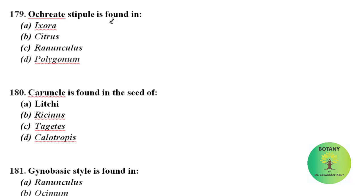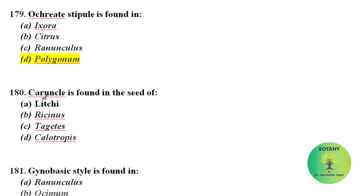Ocreate stipule is found in — this is a characteristic feature of family Polygonaceae. Among these, Polygonum is a member of family Polygonaceae, so ocreate stipules will be found in Polygonum.